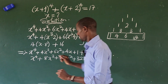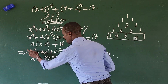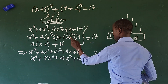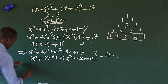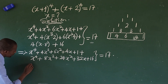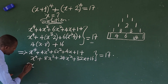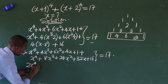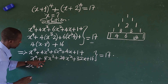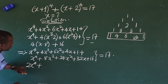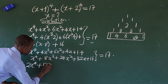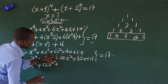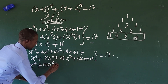We can add this to this, this to this, this to this, and this to this. So we get 2x to the power of four plus 12x to the power of three plus 30x to the power of two plus 36x, all equal to 17 minus 17 which gives 0.